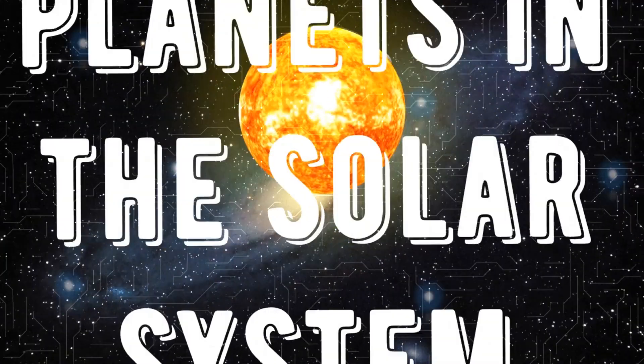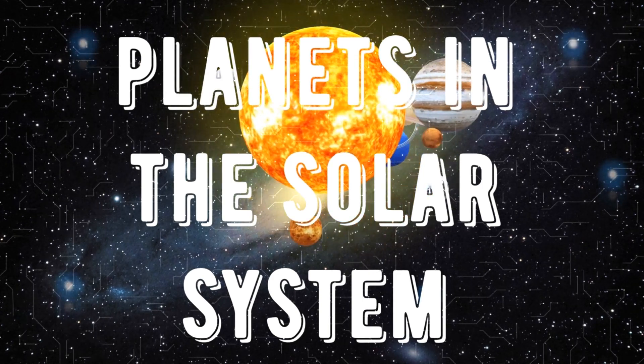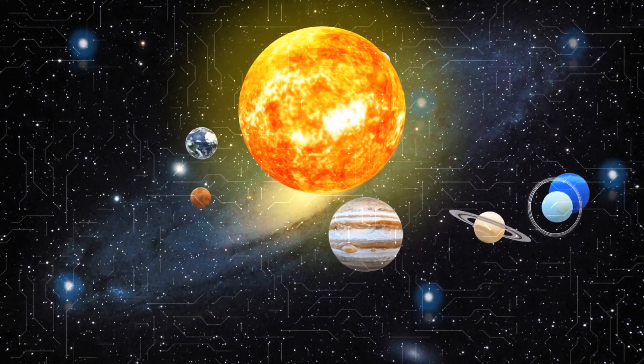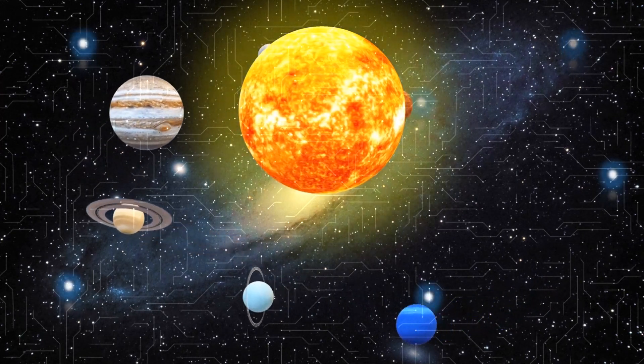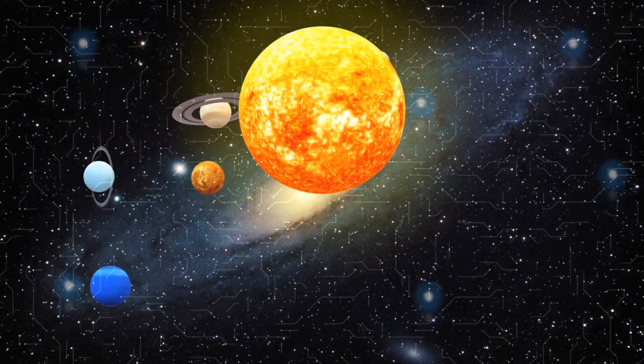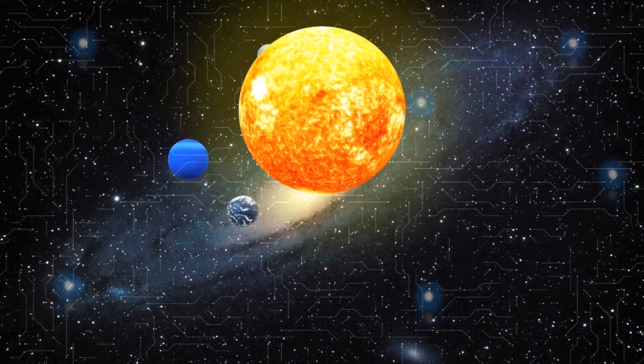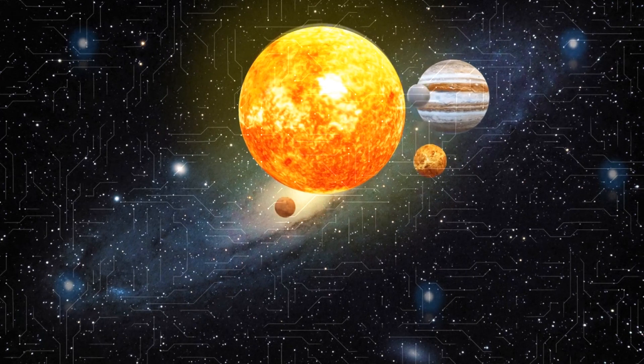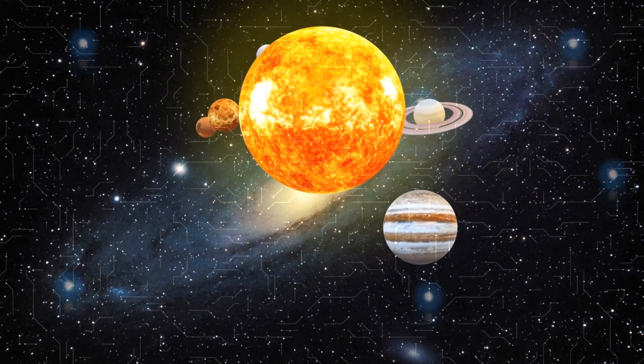Planets of the Solar System: Description, composition, and interesting facts. The Solar System is an amazing and diverse place consisting of 8 planets and many other celestial bodies. In this report, we will study each planet in our Solar System, consider their composition, distance from the Sun, and some interesting facts about them. 1. Mercury. Mercury is the closest planet to the Sun and the smallest planet in the Solar System. It consists mainly of rocks and metals such as iron and nickel. The distance from Mercury to the Sun is approximately 57.9 million kilometers. Interesting fact, despite its proximity to the Sun, Mercury can be very cold on its surface, as it has little to no atmosphere to retain heat.